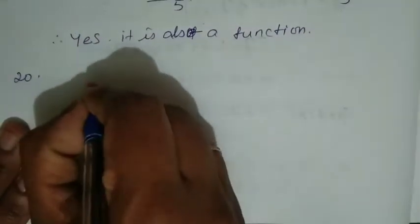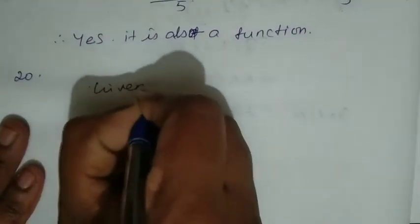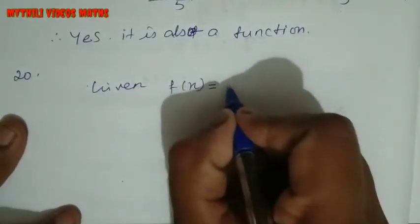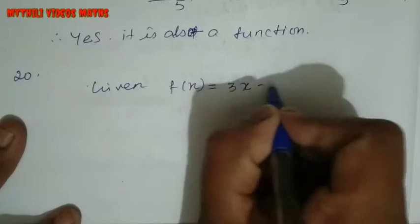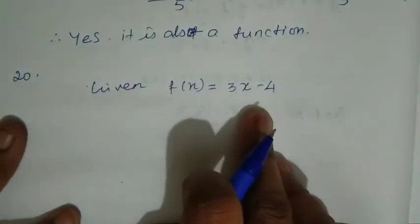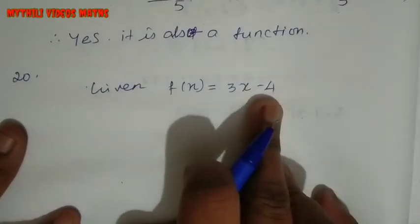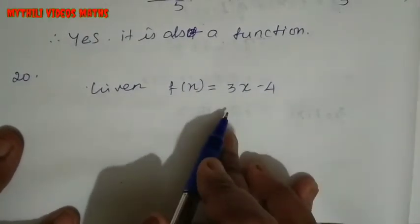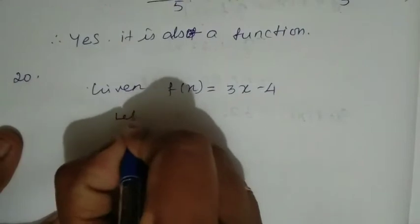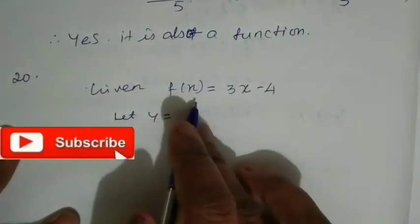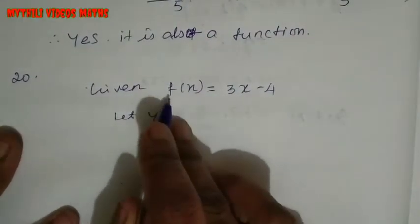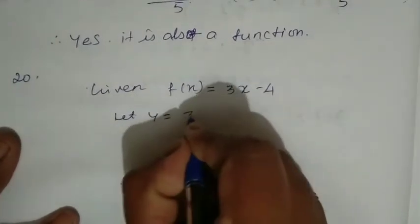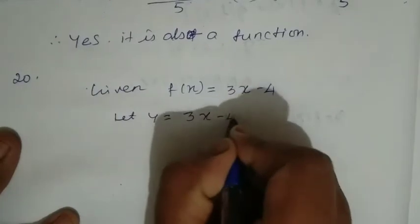Just write 'given.' What is given? The function given is 3x - 4. So f(x) = 3x - 4. Now what we need to do: let y equal to the function. So y = 3x - 4.